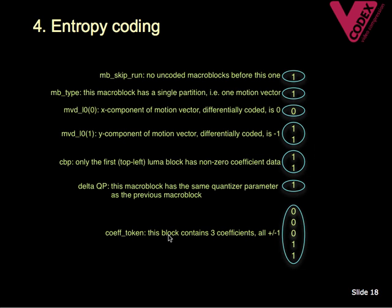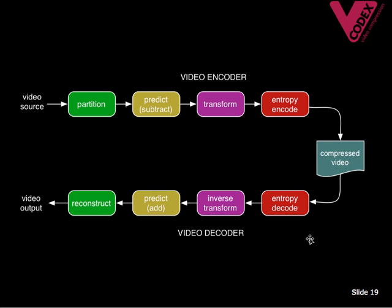The final stage is entropy coding — think of this as general-purpose data compression. Here's a small example from the H.264 standard. On the left we have a series of pieces of information, called syntax elements, produced by the video encoder, and each one is mapped to a number of bits on the right. To put all of this together: the video encoder takes in uncompressed video, splits it into frames and partitions these into blocks for processing, predicts each block from previous video frames or nearby regions and subtracts the prediction, then transforms and quantizes the result — throwing away information that's not very important to the image. All of these stages feed into the entropy encoder, which organizes and compresses the data into a compact binary form.